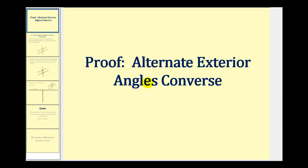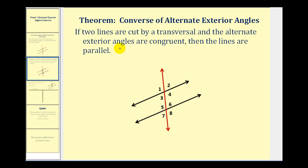Welcome to a proof of the alternate exterior angles converse. This theorem states that if two lines are cut by a transversal and alternate exterior angles are congruent, then the lines are parallel. So if angle one is congruent to angle eight, or angle two is congruent to angle seven, the two lines would be parallel.